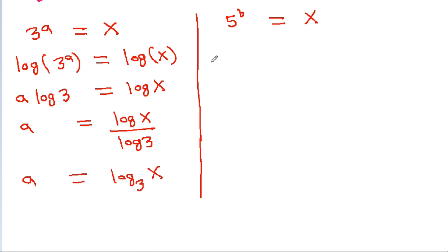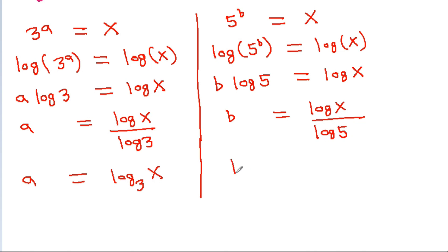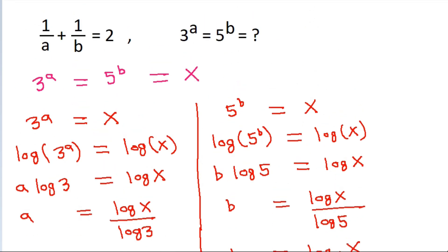Similarly, taking log on both sides of 5^b = x, log(5^b) = log(x), giving b × log(5) = log(x). Therefore, b = log(x)/log(5), which is log base 5 of x.